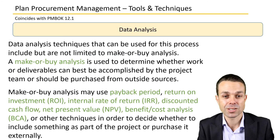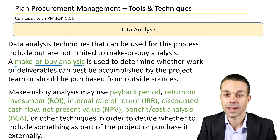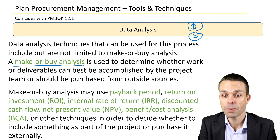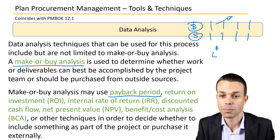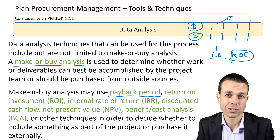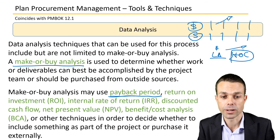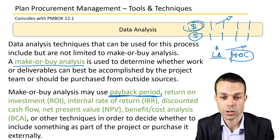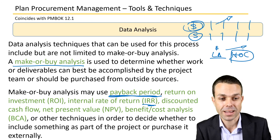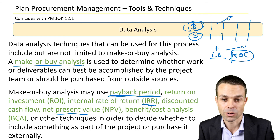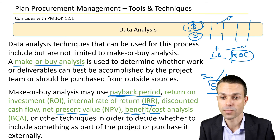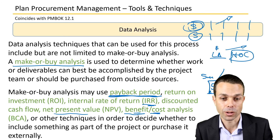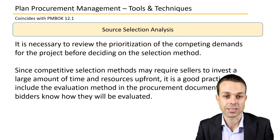Data analysis includes make-or-buy analysis, where we look at how much it costs to make versus how much it costs to buy, plus ongoing costs. That ongoing cost determines the payback period — if we buy it for a low amount but it has high ongoing costs, it may actually cost more in the long run. Financial analysis tools that can be used include return on investment, internal rate of return, discounted cash flow or net present value, and cost-benefit analysis. For example, if the benefit is five million versus one million to buy, our cost-benefit ratio is five to one.